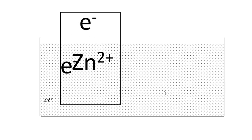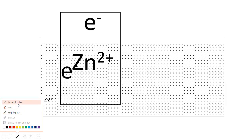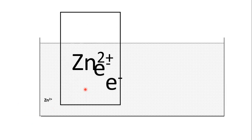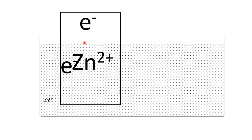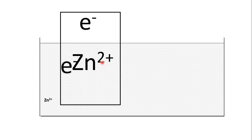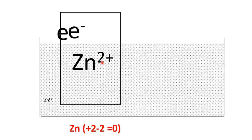What will happen when the cell functions is what we are going to see. The Zn²⁺ ion carries a 2+ charge and the two moving electrons carry a 2− charge. The overall charge is 2+ plus 2− equals zero, so the zinc rod is neutral. Let us now see what happens when the cell is functioning.